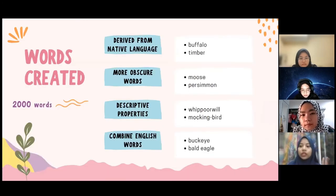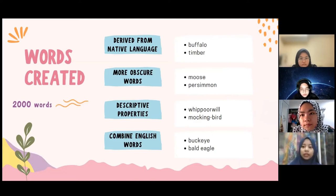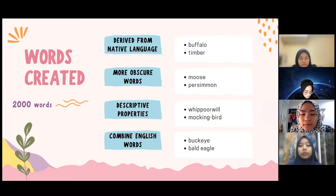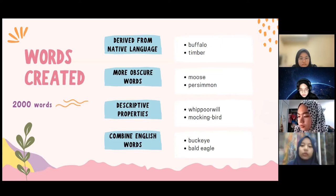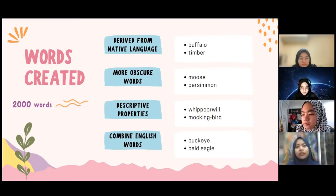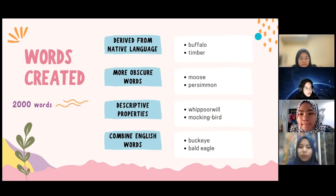There were 2,000 new words recorded in the journal. The new words created can be categorized into four types. The first is words derived from the native language of the people they settled among, such as buffalo and timber. Second, more obscure words like moose and persimmon. Third, words that match the description of things they found, like whippoorwill and mockingbird — mockingbird being a bird that loves to imitate other bird songs.